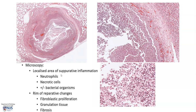Microscopically, we can see a localized area of suppurative inflammation within the cavity. This suppurative inflammation is composed of numerous neutrophils, shadowy outlines of necrotic cells, and sometimes even the causative bacterial organisms. In the rim or periphery of the abscess, there may be fibroblastic proliferation of spindle cells or granulation tissue with small blood vessels, and eventually this can be replaced by fibrosis.